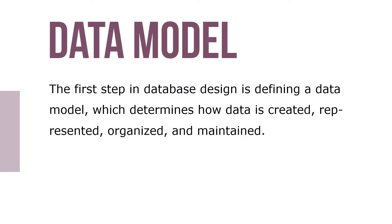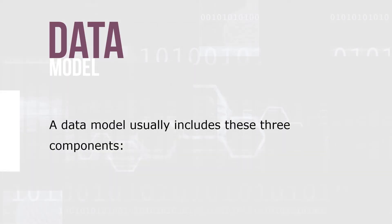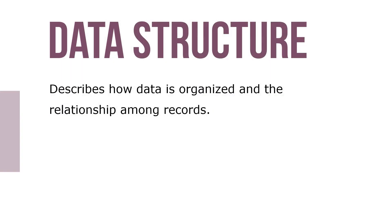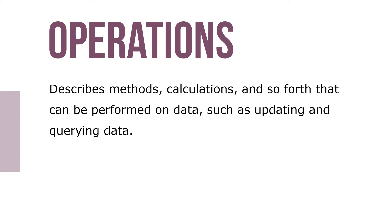The first step in database design is defining a data model, which determines how data is created, represented, organized, and maintained. A data model usually includes three components: data structure, which describes how data is organized and the relationships among records; operations, which describe methods, calculations, and so forth that can be performed on data such as updating and querying data.